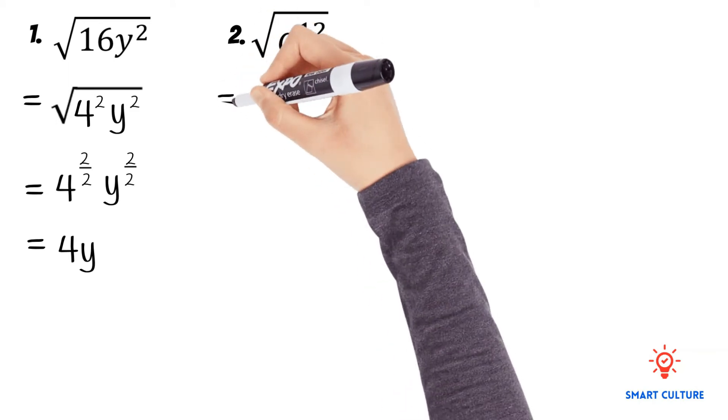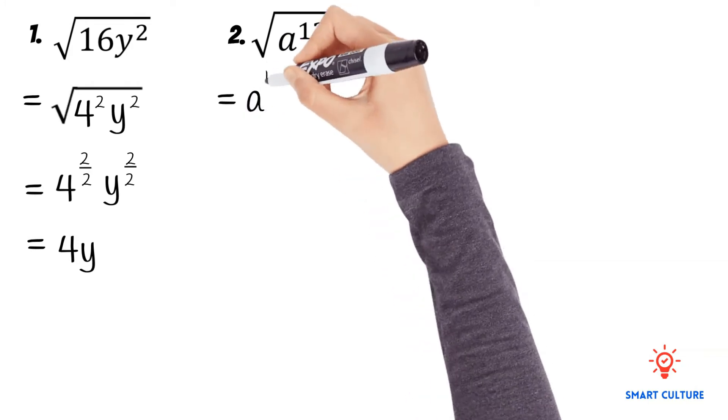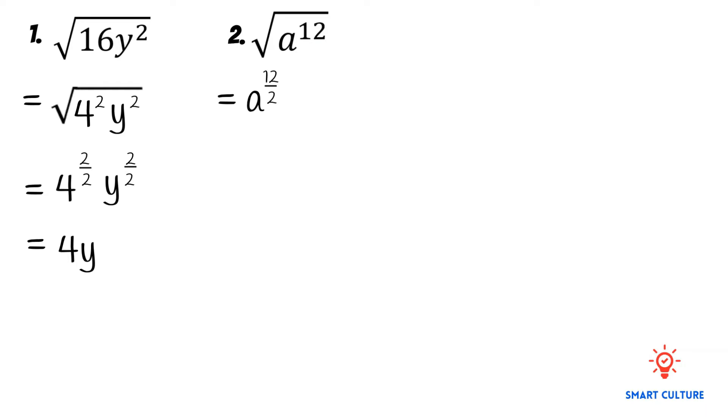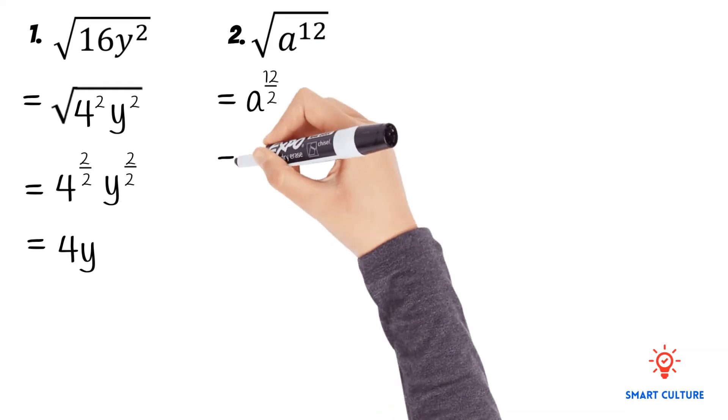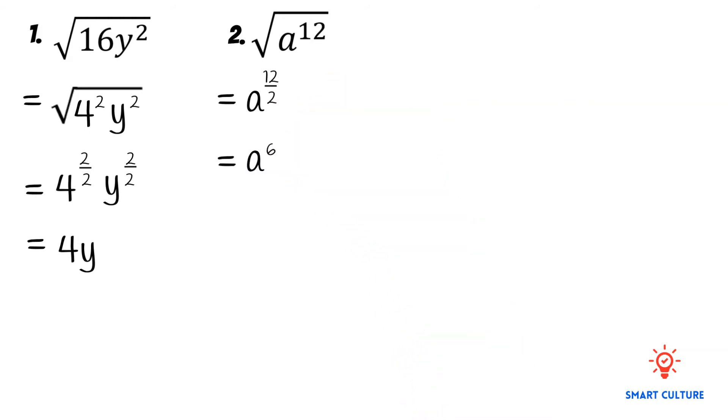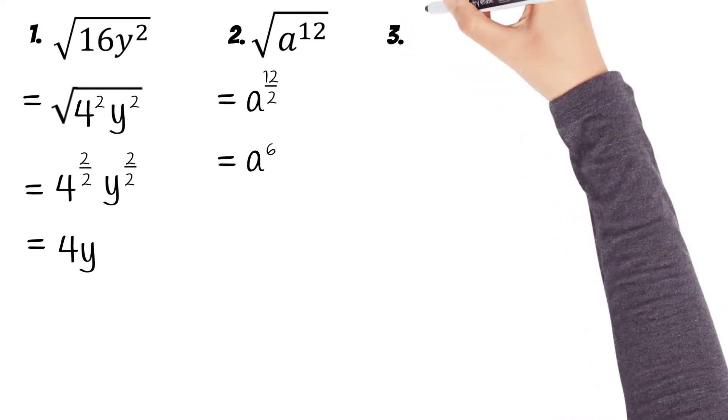Here we have to simplify the square root of a to the power of 12. What we'll do is change this root to a fractional exponent. That means we have to divide the exponent of 12 by 2, and that equals 6. So the final answer will be equal to a to the power of 6.